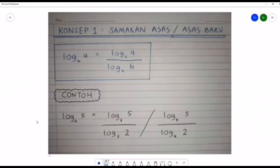Terdapat beberapa konsep yang perlu kita tahu sebelum menjawab soalan logarithm. Konsep yang pertama adalah samakan asas ataupun membina asas yang baharu. Secara umumnya, log A asas B boleh ditukarkan kepada log asas yang baharu, dan A perlu diletakkan di atas pecahan manakala B diletakkan di bawah pecahan. Contohnya, log 5 asas 2...